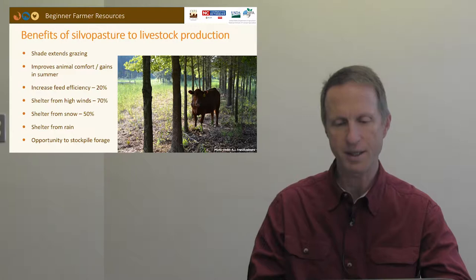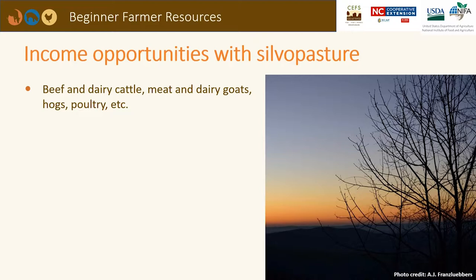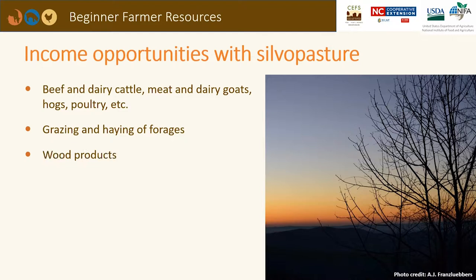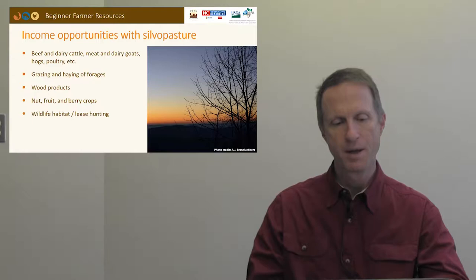Income opportunities with silvopasture include a diversified livestock arrangement suitable for cattle, goats, sheep, hogs, and poultry. There's opportunity for grazing and haying of forages, wood products, fruits and berries if you plant the right trees, and wildlife habitat. If you're in an environment where you could lease out hunting, this is also a possibility.